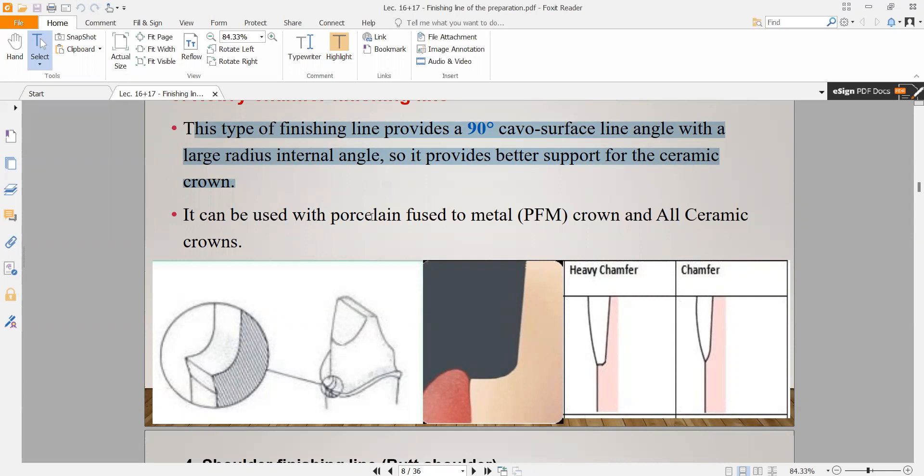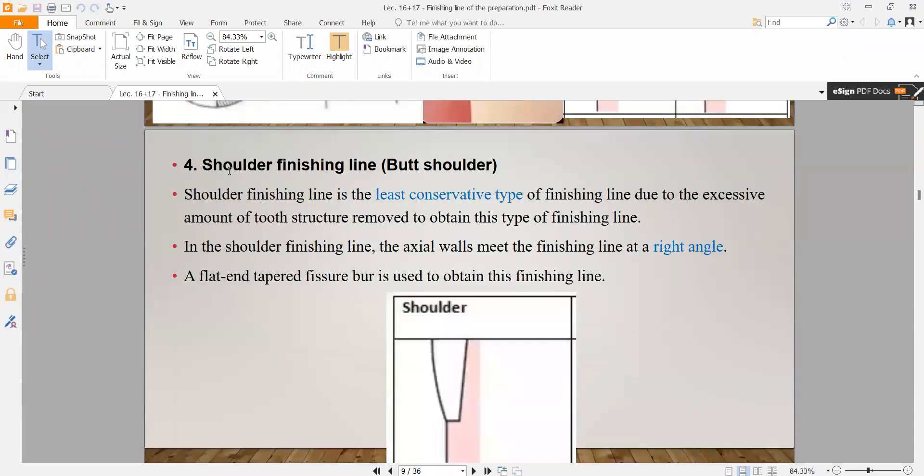This is the indication, when we use it. It can be used with porcelain fused to metal or all ceramic crown restoration. We use it in case of porcelain fused to metal or ceramic crown because it provides support for this type of crown.